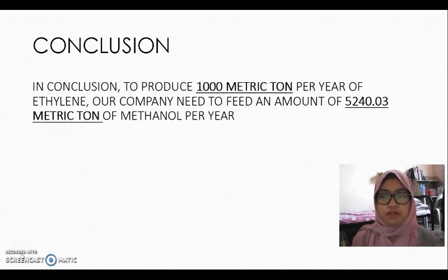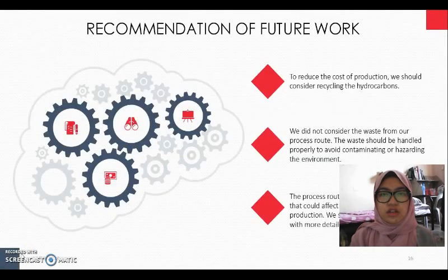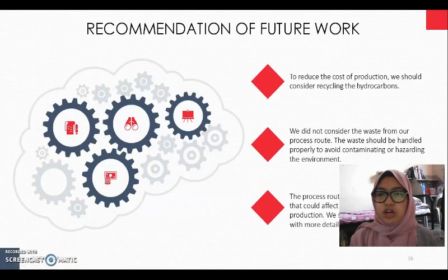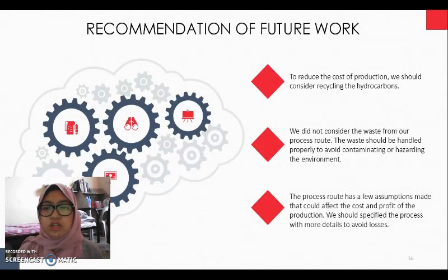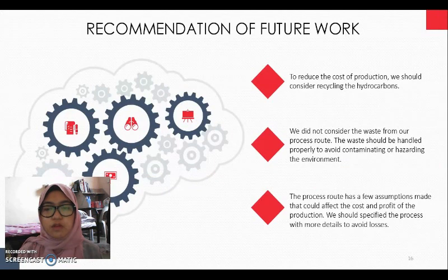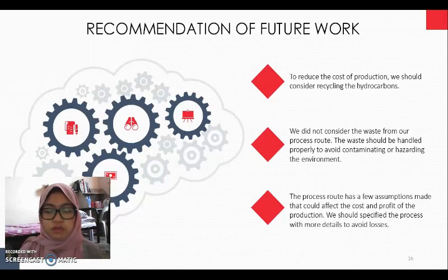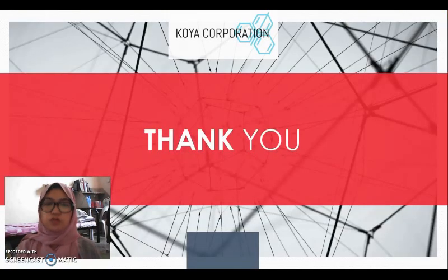In conclusion, to produce 1000 metric ton per year of ethylene, our company needs to feed an amount of 5240.03 metric ton of methanol per year. Recommendation of future work: To reduce the cost of production, our company needs to consider recycling the hydrocarbons. Also, we did not consider the waste management from our process road. The waste should be handled properly to avoid contamination or hazard to the environment. And lastly, our process road has a few assumptions made which could affect the cost and profit of the production. We should specify the process with more details to avoid losses. Thank you.